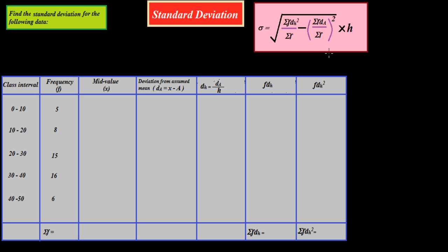Now look at this formula. We have to find sigma, the standard deviation. Sigma is equal to the square root of the summation of FDH² over summation of F, minus the summation of FDH over summation of F, whole squared, multiplied by H.